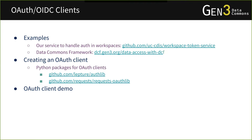For examples of OAuth or OIDC clients in practice, we have examples on our GitHub. There's a workspace token service that retrieves access tokens to operate as the user, used in our data portal. You can also check out dcf.gen3.org for more details about the data commons framework and examples of OAuth clients. For actually creating an OAuth client, there are Python packages like authlib and requests-oauthlib that you could use to build one.